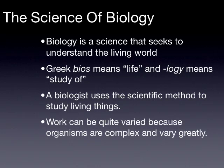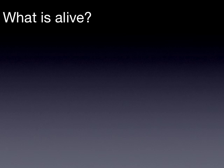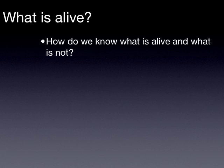A biologist uses the scientific method to study living things. We talked about the scientific method last year in physical science. They hypothesize, they do experiments, and they come to conclusions regarding the living world around us. Because organisms are complex and vary greatly, the work that a biologist does can also vary greatly. You can study things like plants and animals, or you can focus on specific plants or specific animals. Even so, biologists around the world are linked together by one simple thing: they are studying living creatures.